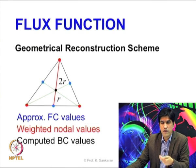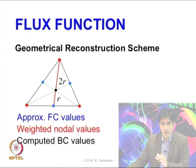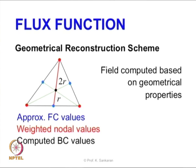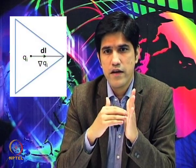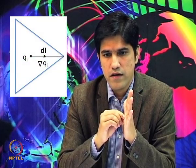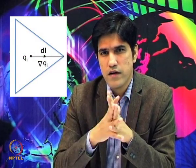You do not need to rerun this every time because once you know the domain, those values are already fixed. The field computation is based on geometrical properties; there is no need to compute gradients at the barycenters as in the muzzle scheme. In that way there is an improvement, and this scheme is much better than the truly upwind scheme without doing too much computation.